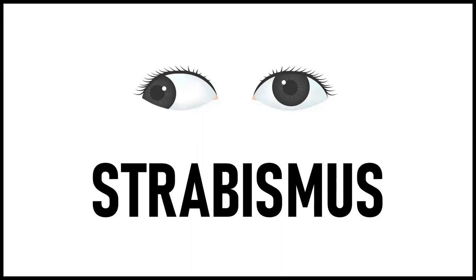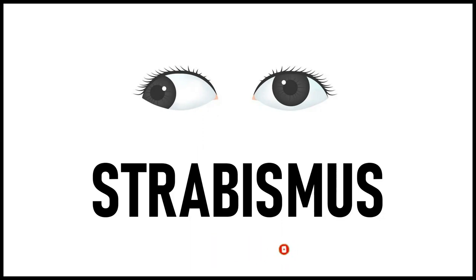We are going to have a series of three lecture videos looking at strabismus. We will start by looking at how the eye works, especially the extraocular muscles and binocular vision. Then we will look at the different classifications of strabismus, and finally the management. So we will start off with what strabismus is.